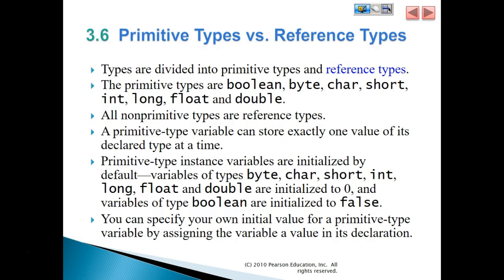Primitive types versus reference types: types are divided into primitive types and reference types. The primitive types are boolean, byte, char, short, int, long, float, and double. All non-primitive types are reference types. A primitive type variable can store exactly one value of its declared type at a time. Primitive type instance variables are initialized by default.